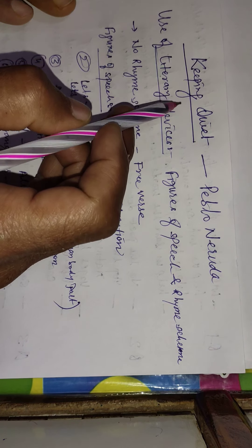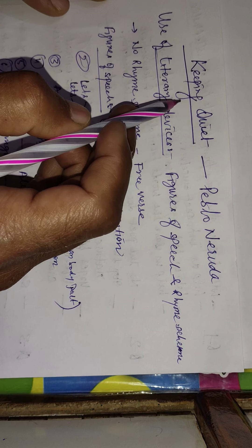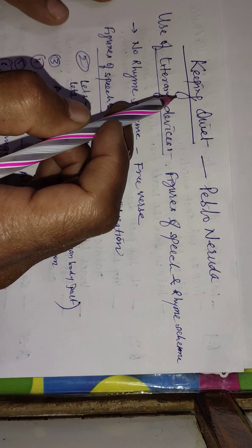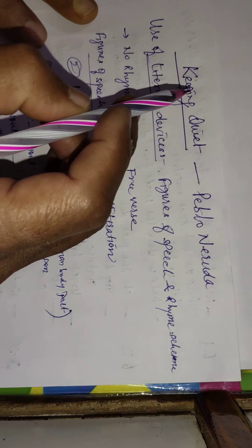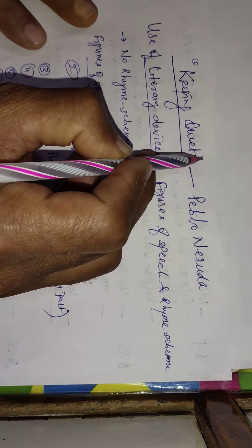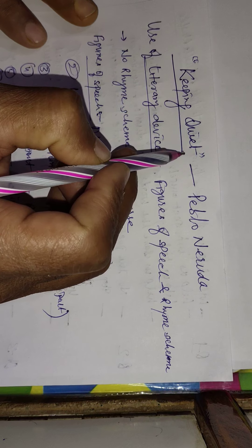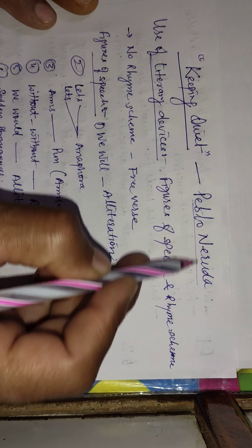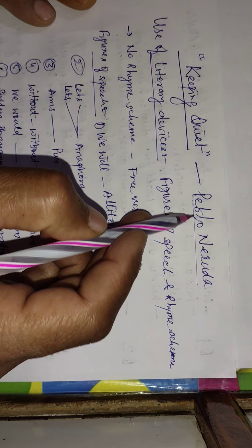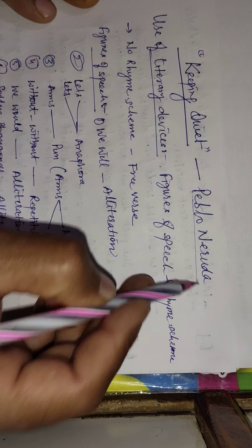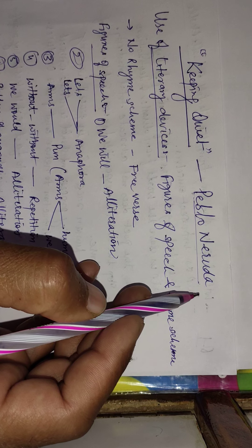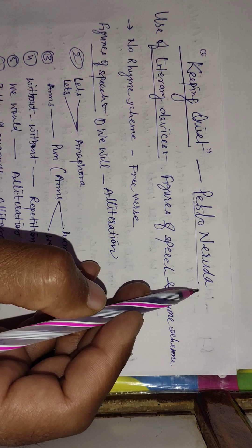The first question is: from which poem has this stanza been extracted? You must know the name of the poem is Keeping Quiet. You must know the spelling also. The name of the poet is Pablo Neruda, a Chilean poet. Chilean means he belonged to a country named Chile, which is located in the South American continent.